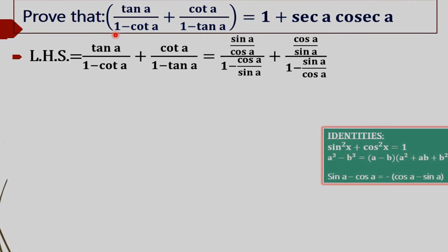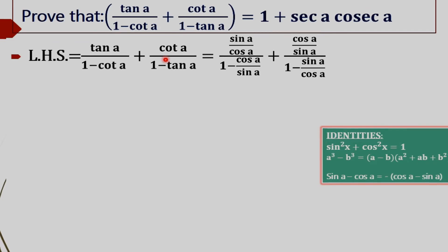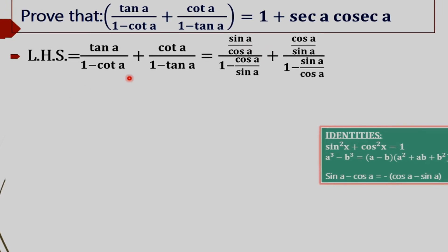What we are going to do here is rewrite each term — tan A and cot A — in terms of sin A and cos A. We do this in order to get our required RHS. The RHS is in terms of sec A and cosec A, where sec A = 1/cos A and cosec A = 1/sin A. So we rewrite: tan A = sin A / cos A and cot A = cos A / sin A.